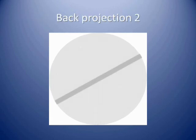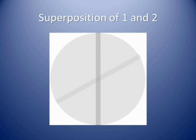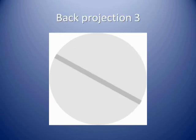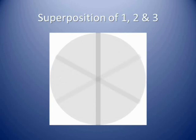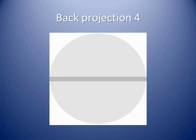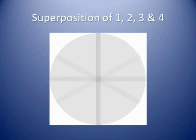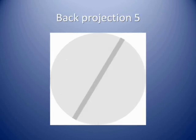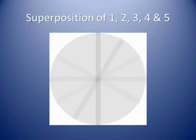We then repeat that process with the x-ray tube at a different angle, so that we have two back projections. These back projections are then superimposed upon each other. The process is repeated with more back projections and superposition of these back projections until a complete image is reconstructed, as shown in the final slide in the sequence.